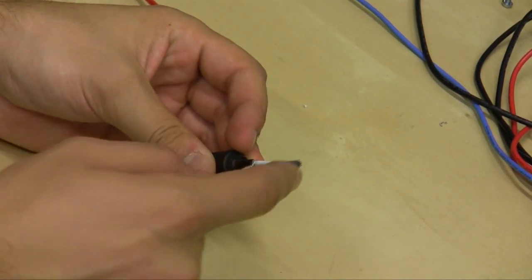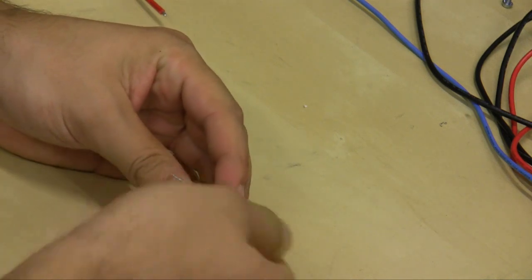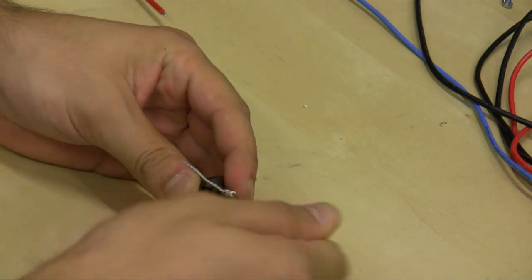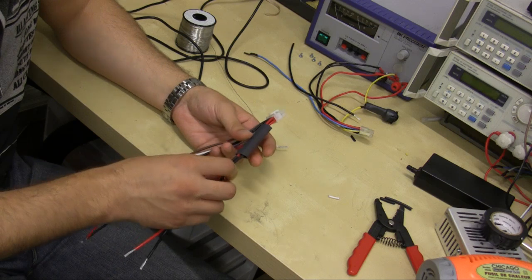So now I have the negative part and the positive part. Make sure the positive is twisted around so we get it ready for soldering. So before we start soldering, there's one more thing, or a couple more things you need to do.